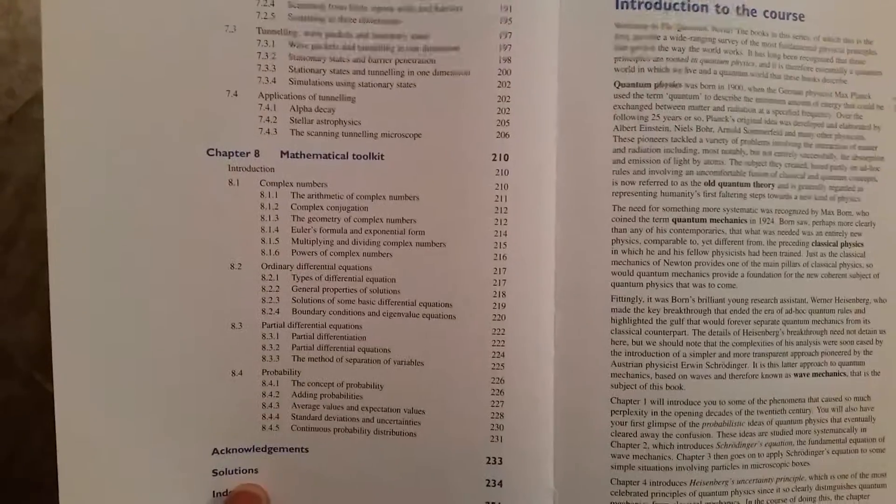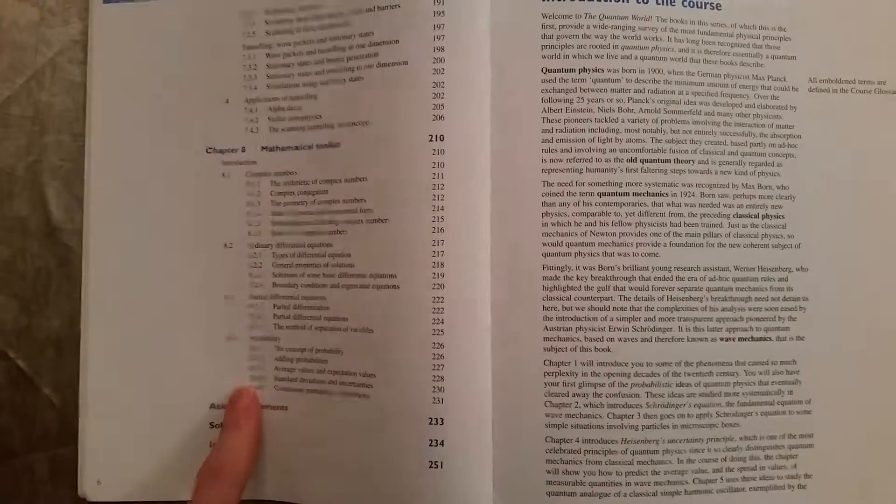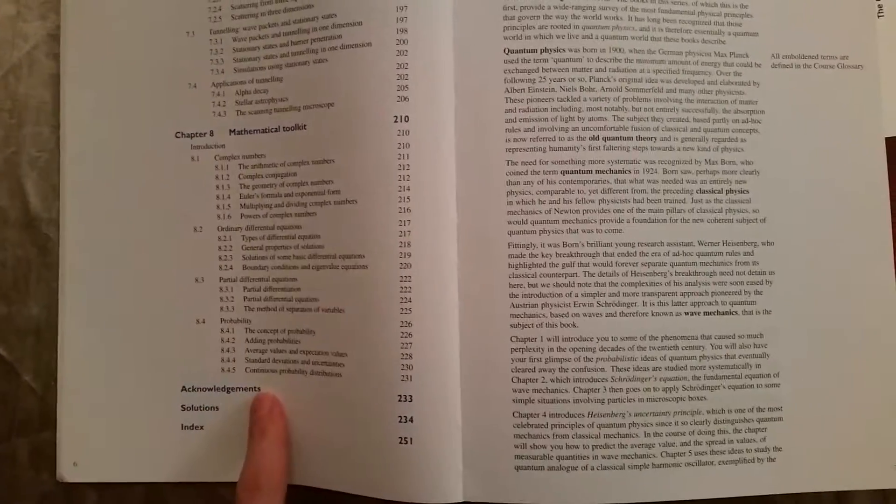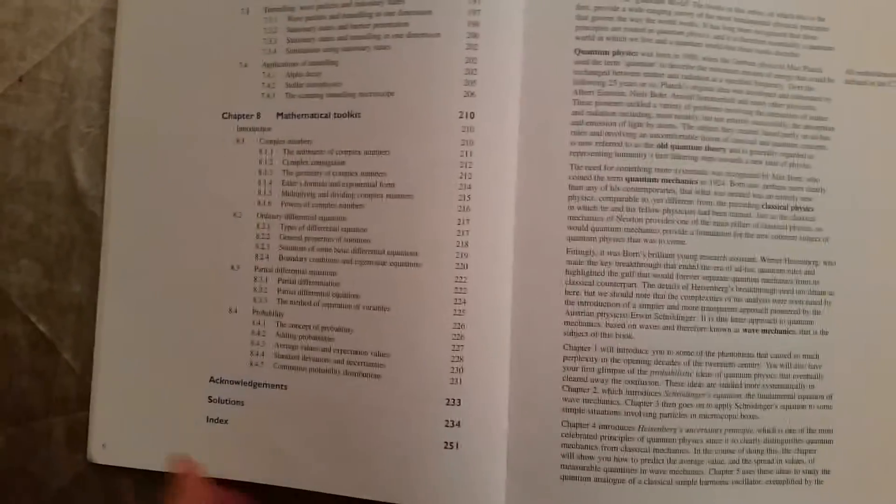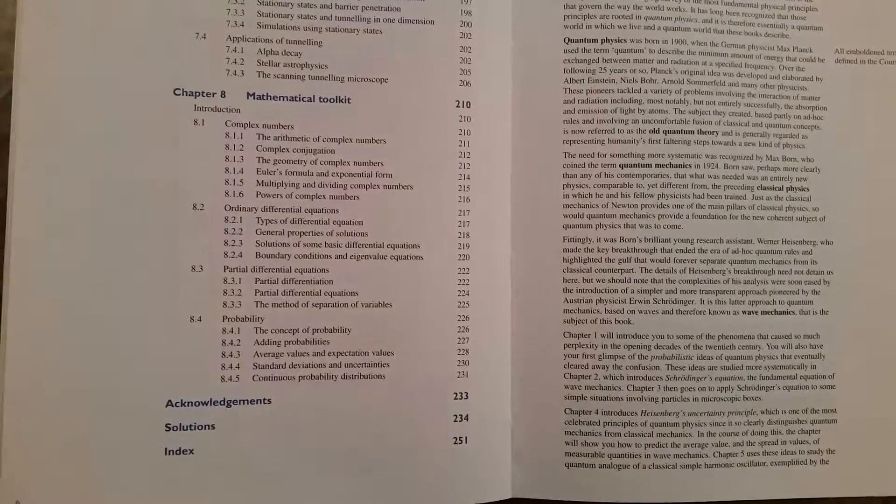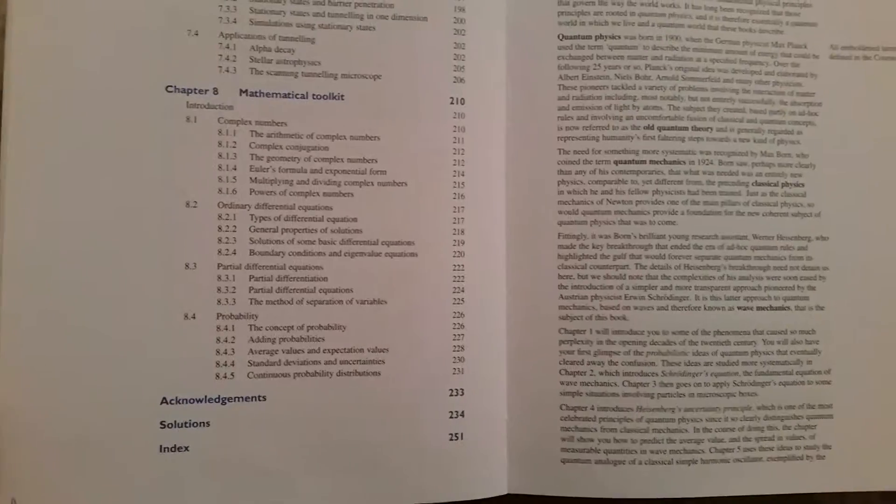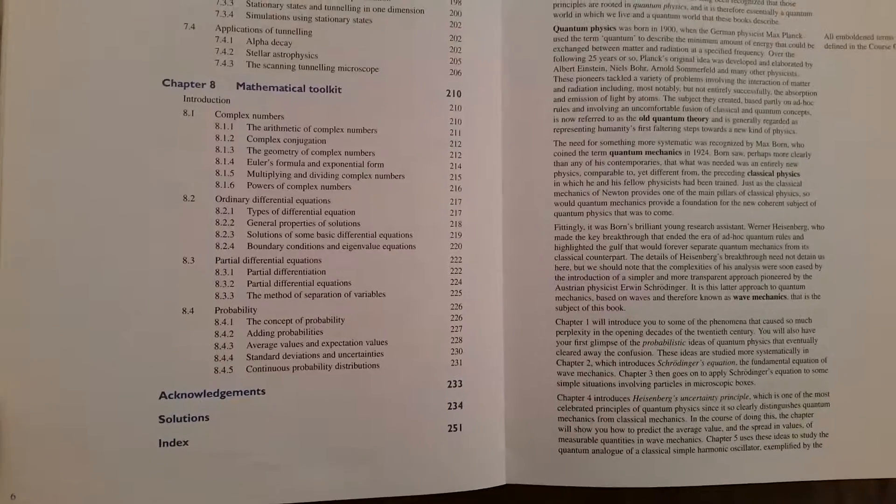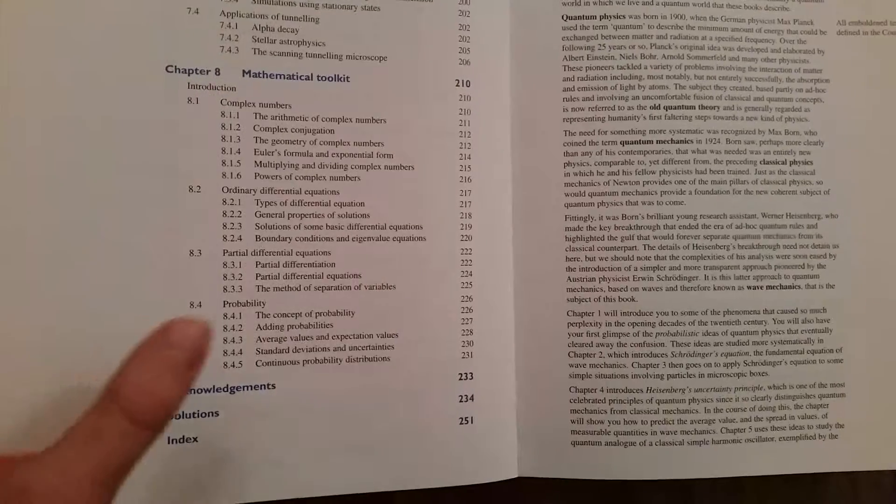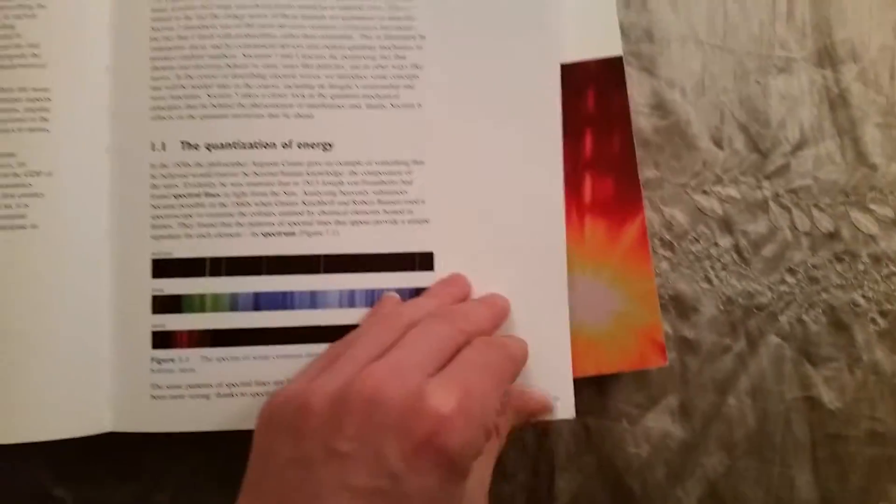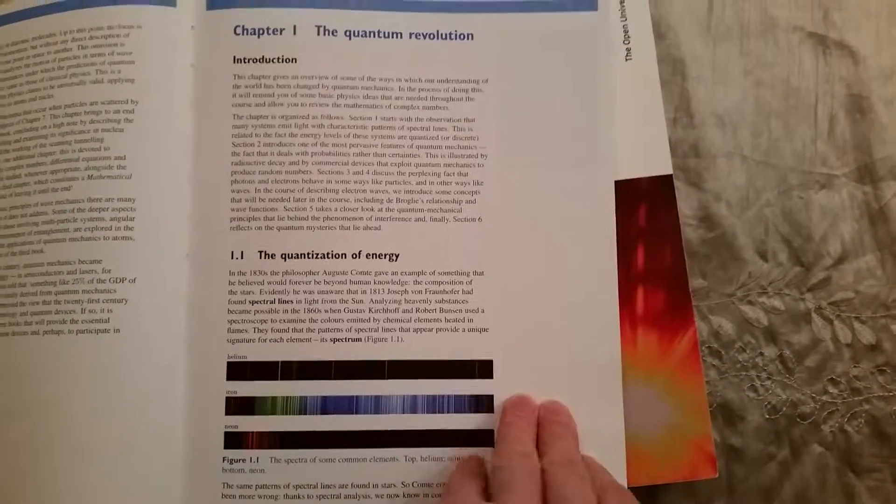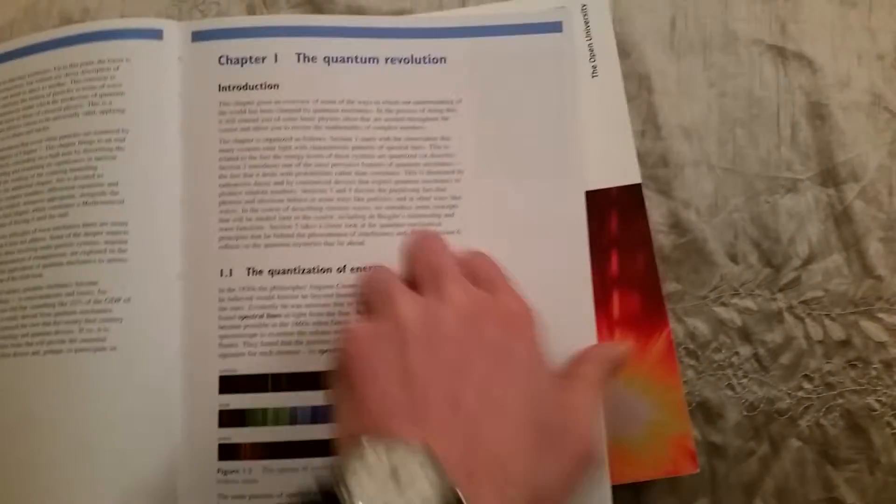At the end in the last chapter of Book 1, very much like the electromagnetism book, you get a mathematical toolkit. Complex numbers are very important in this course, as are partial differential equations, and probability. Also calculus, integration especially with spherical coordinates.